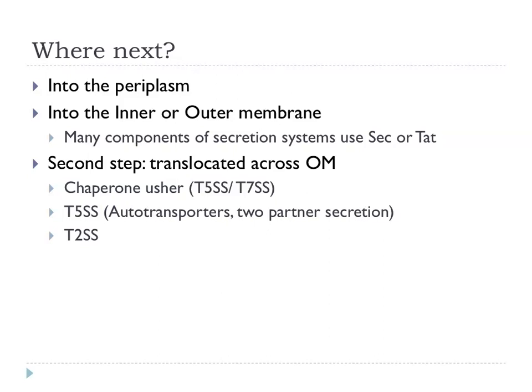There are a number of different systems for translocation across the outer membrane: the Chaperone-Usher system, the type 5 secretion system known generally as autotransporters, and type 2 secretion. For the rest of the talk I'm going to give a brief overview of each one of those; in later talks we will cover some other secretion systems in much more detail.